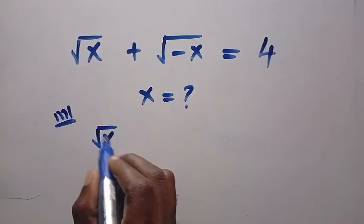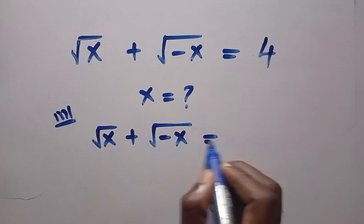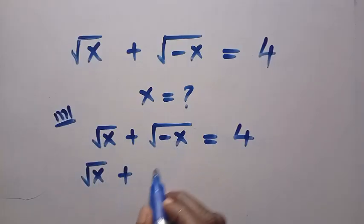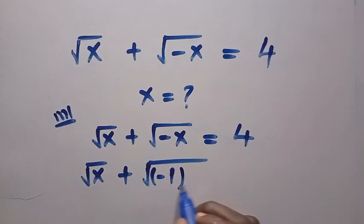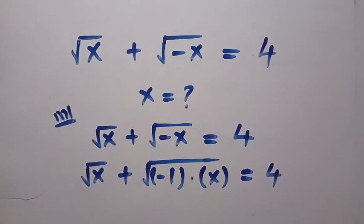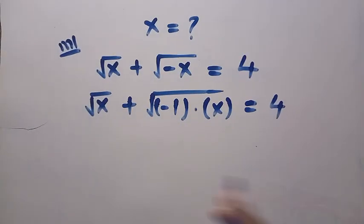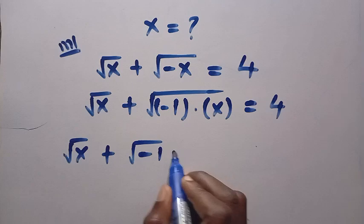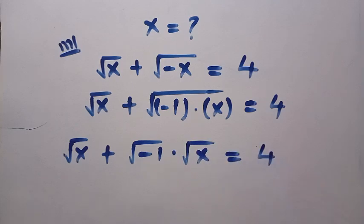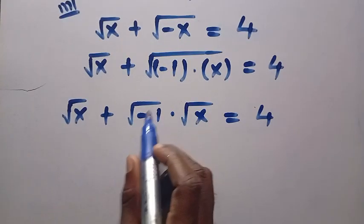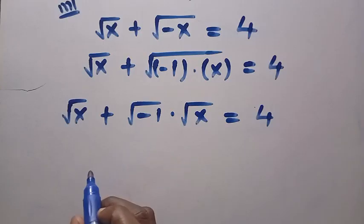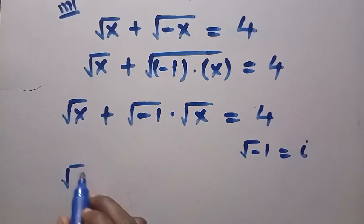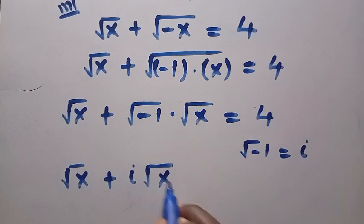Method 1: The equation is root x plus root minus x equals 4. We can separate root minus x as root of minus 1 multiplied by x. Using the properties of roots, we have root x plus root minus 1 multiplied by root x equals 4. We note that the square root of minus 1 is given as i, so root minus 1 equals i, which is an imaginary number. It becomes: root x plus i times root x equals 4.